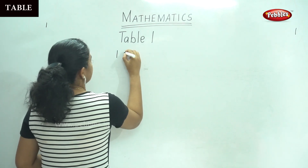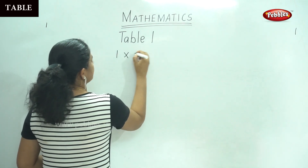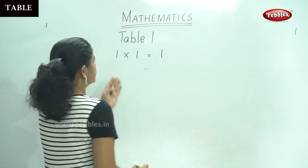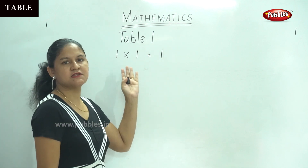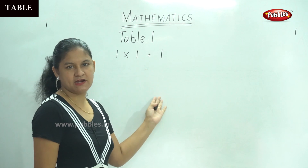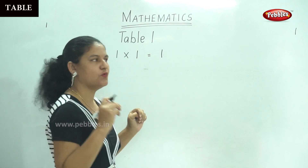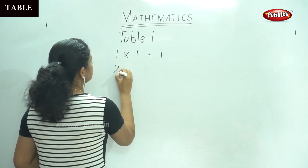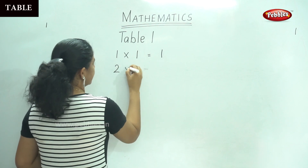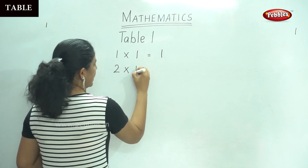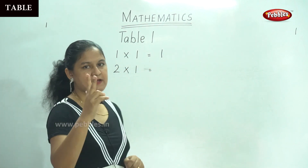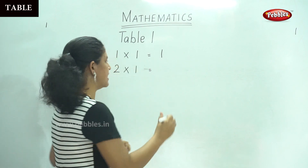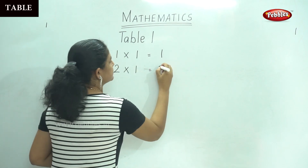1 times 1 is nothing but 1. It is called 1 times 1 gives you number 1. Next, 2 times 1 — counting 1 twice will give you number 2.